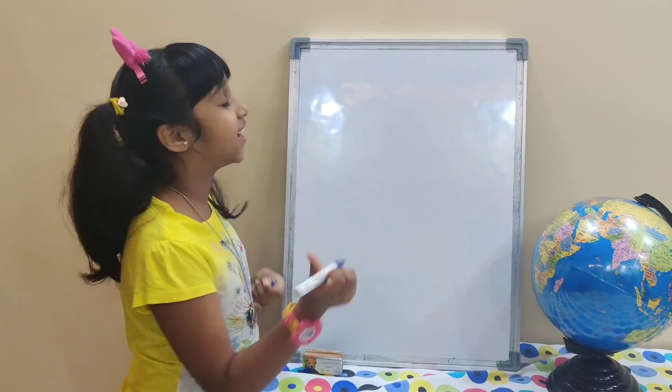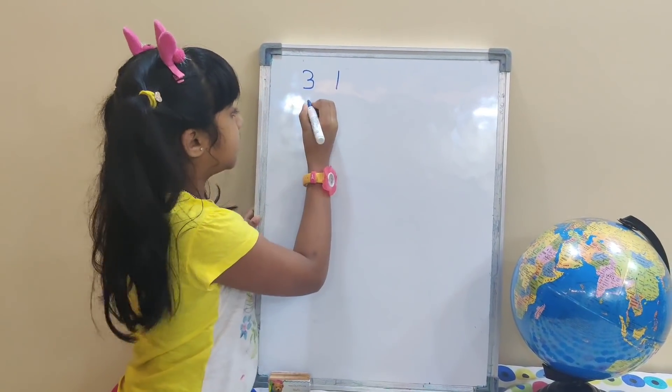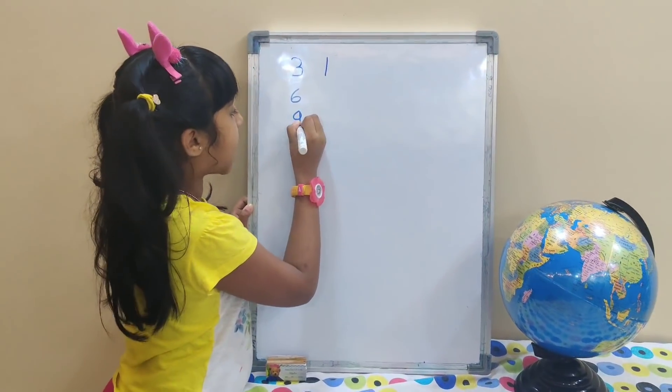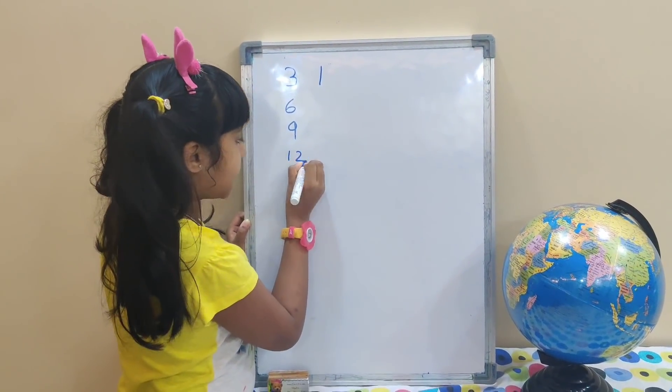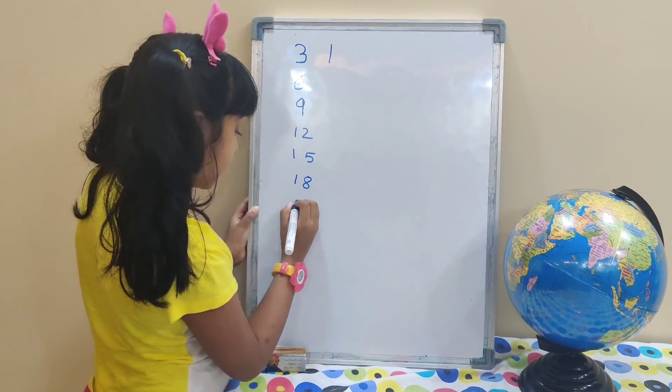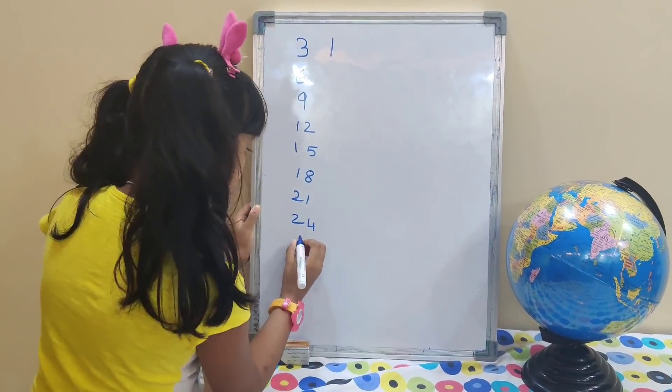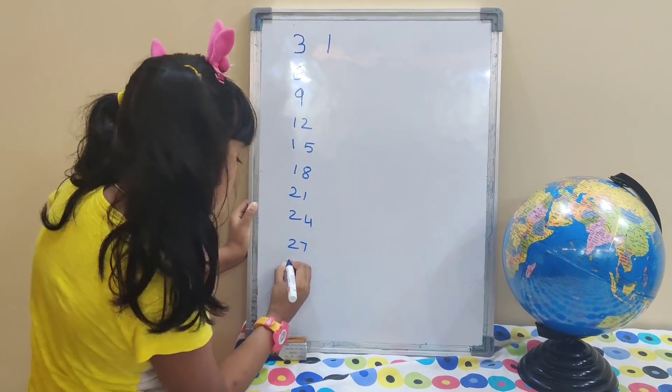31. 3, 1, 31. 3 1's are 3, 3 2's are 6, 3 3's are 9, 3 4's are 12, 3 5's are 15, 3 6's are 18, 3 7's are 21, 3 8's are 24, 3 9's are 27 and 3 10's are 30.